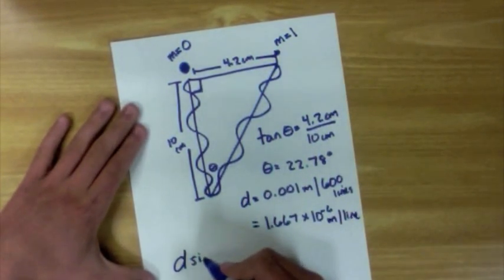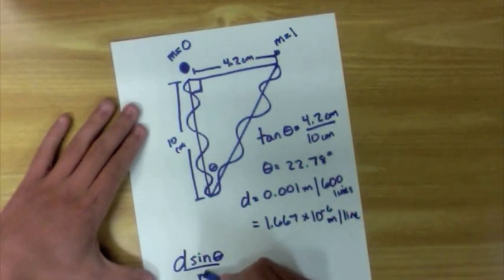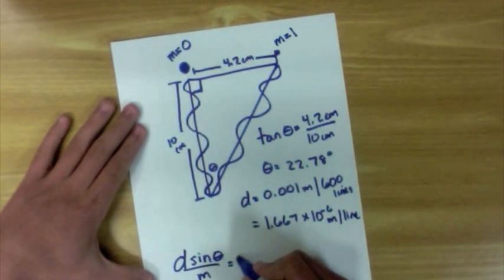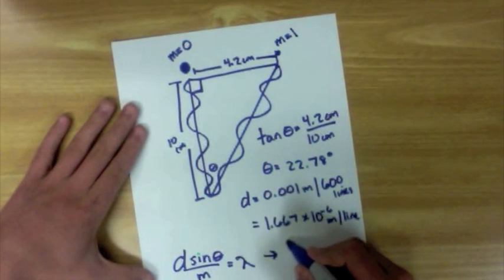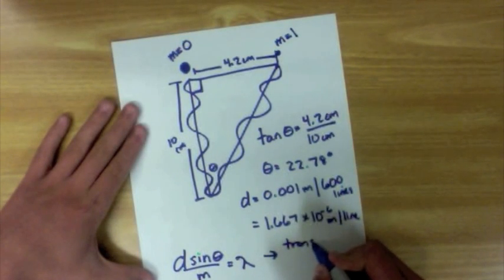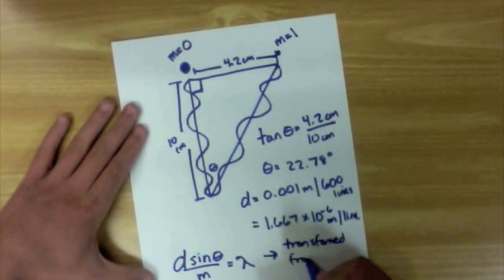To find lambda, we can use the equation d sine theta divided by m, which is transformed from the original equation d sine theta equals m lambda.